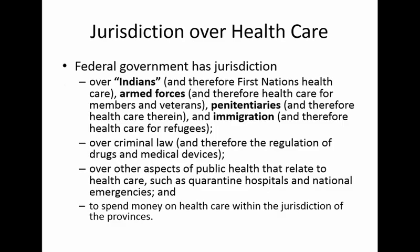The federal jurisdiction over health care is again derivative of federal jurisdiction in other areas. The 1867 Constitution gives the federal government jurisdiction over Indians — that's the language used in the Constitution — and therefore the federal government has jurisdiction over First Nations health care. The federal government has jurisdiction over the armed forces and therefore over health care for members of the armed forces and veterans. It has jurisdiction over penitentiaries and therefore health care therein, and jurisdiction over immigration and therefore health care for refugees, refugee claimants, and others involved in the immigration process.